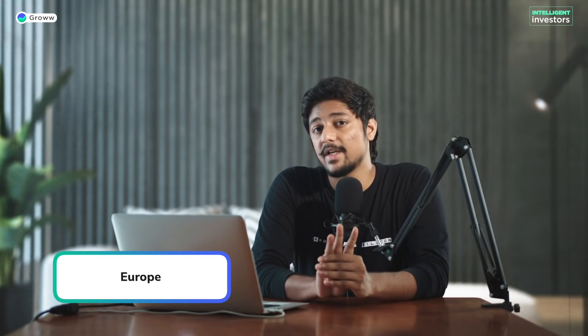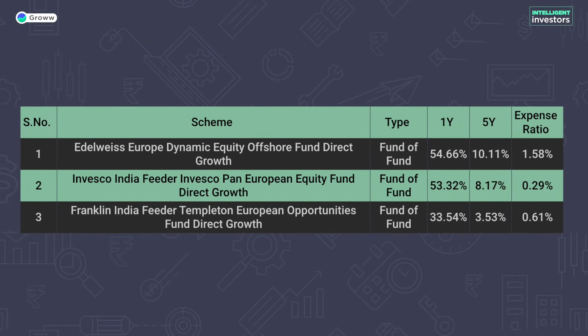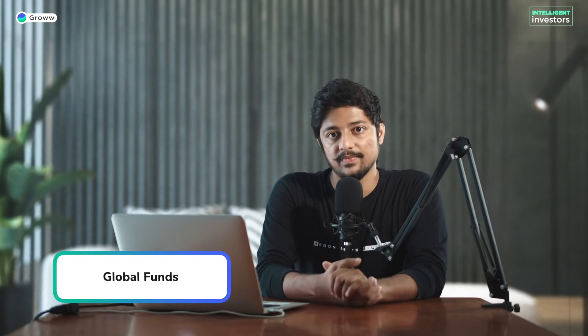For Europe, there are three funds. The first is Edelweiss Europe Dynamic Equity Offshore Fund — a fund of funds — with a five-year return of only 10% and an expense ratio of 1.58%. The second is Invesco India Feeder Invesco Pan European Fund — a feeder fund — with a five-year return of 8.17% and a low expense ratio of 0.29%. The third is Franklin India Feeder Templeton European Fund with only a 3.53% return in the last five years and an expense ratio of 0.61%.